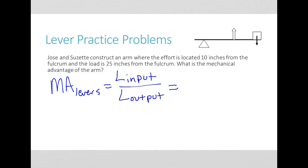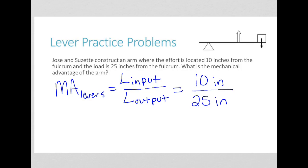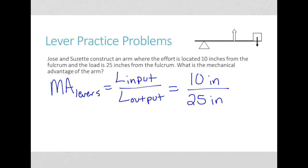If the input arm is 10 inches and the output arm is 25 inches, then the mechanical advantage is 10 divided by 25, which equals 0.4.